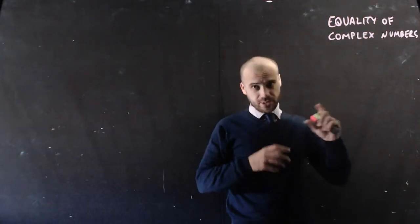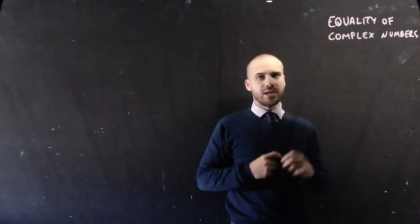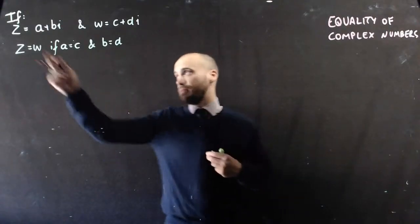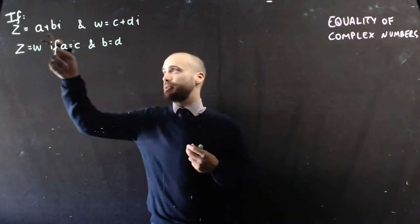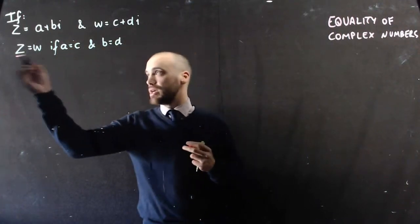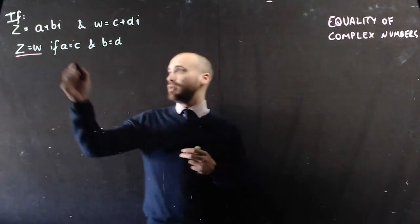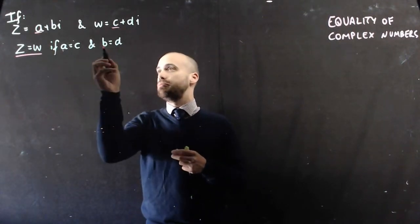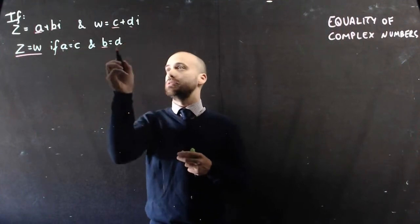Equality of complex numbers. The next thing I say is going to be super obvious. If we've got two complex numbers, Z and W, so Z = A + Bi and W = C + Di, they will be equal